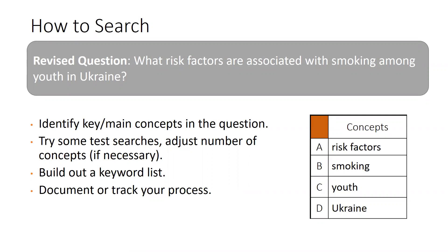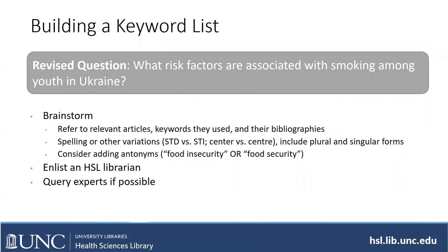Build out a keyword list and document or track your process. Start by referring to relevant articles from your quick search — mine the titles and abstracts for other keywords and synonyms, and look at their bibliography. Think about spelling variations — with STDs, some articles might list them as STIs, or use a British spelling. Make sure you include plural and singular forms of words. Consider adding antonyms and not just synonyms — for example, a lot of people research food insecurity, but they actually find the term food security in articles, where lack of food security is equally important. If needed, talk to a librarian or your faculty, who may know more of the lingo in your discipline.